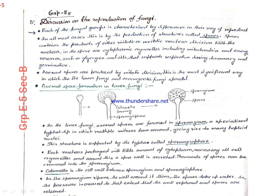Asexual spores are produced by mitotic division. This is the most significant way in which the lower fungi and ascomycetes reproduce. In case of asexual spore formation in lower fungi, a sporangium is formed in which thousands of spores are stored. This sporangium is supported by a structure called sporangiophore. The distinction between the sporangiophore and sporangium is kept by the columella, which is the cell wall.